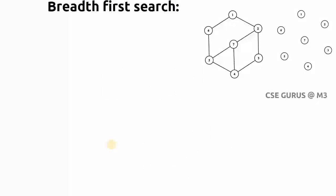Welcome to the class on Design and Analysis of Algorithms. In the previous class we covered Depth First Search. Now we are going to look at another graph traversal method: Breadth First Search. We'll see how this traversal method works. If I take this example graph, first it will select one node — let us take node 1.